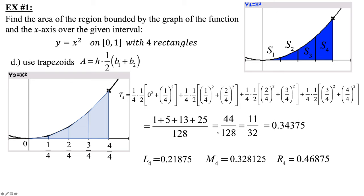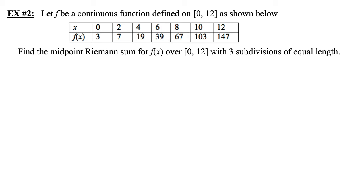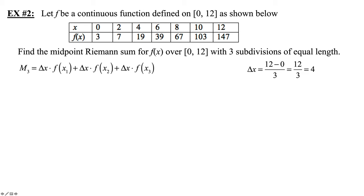Example two: let f be a continuous function defined on 0 through 12, as shown below. Find the midpoint Riemann sum for f(x) over the closed interval 0 to 12 with three subdivisions of equal length — that means M₃. Delta X equals B minus A: 12 minus 0 divided by 3 is 4. So each subdivision has a change in X of 4.